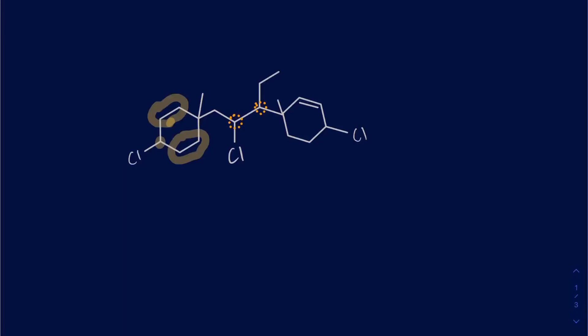Moving along, this one right there is also going to be chiral, because the rings are not the same anymore — the top part of the ring has a double bond and the bottom part does not, so as a result they make those different sides. And then this last one is also going to be your chiral center because you've got chlorine attached, a hydrogen there, and the top half of the ring and the bottom half of the ring are different from one another.